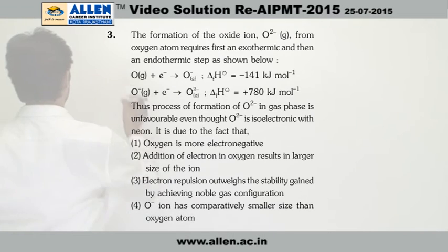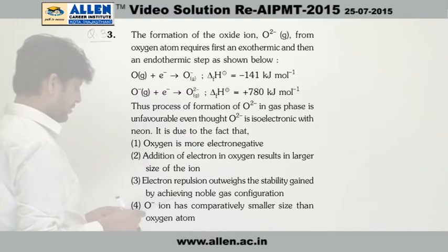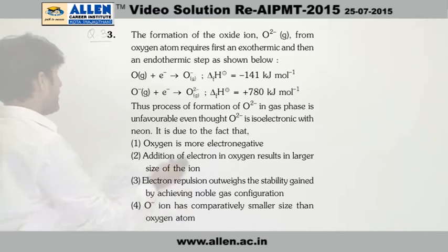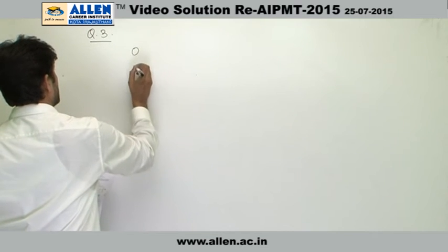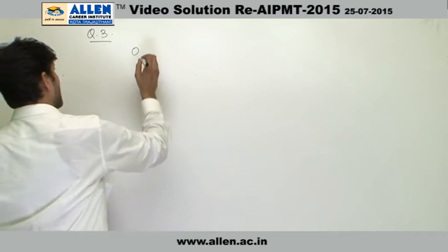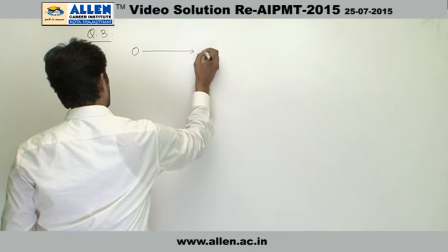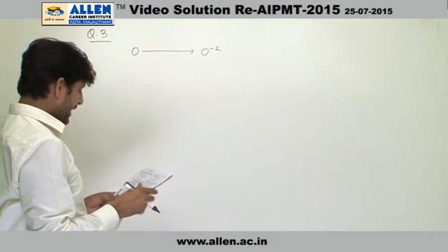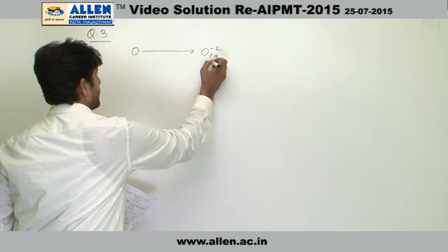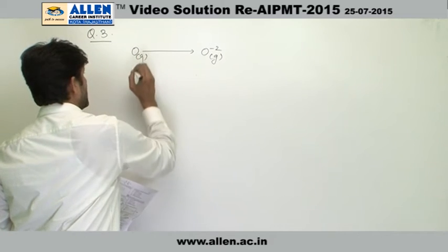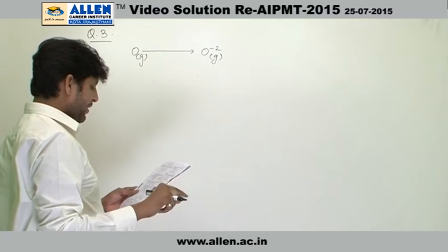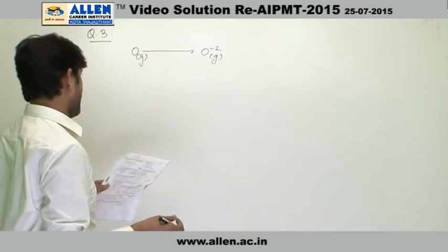Question number third. This question is related to the periodic table and periodic properties - the formation of oxide ion from oxygen. That means there is an oxygen atom and it is getting converted into oxide ion in gaseous phase. From oxygen atom required first an exothermic and then an endothermic step as shown below.